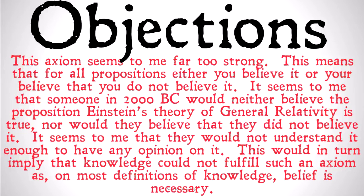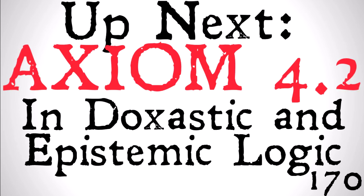Now, because a lot of people think that axiom four is too weak but axiom five is too strong, there have been a series of proposals to solve this, which we're going to look at in the next three videos. The first of them is going to be labeled axiom 4.2 — stronger than axiom four, not as strong as axiom five — in doxastic and epistemic logic. Watch that video coming up, and watch a new video every single day for 100 days here at Carnades.org. Stay skeptical, everybody.